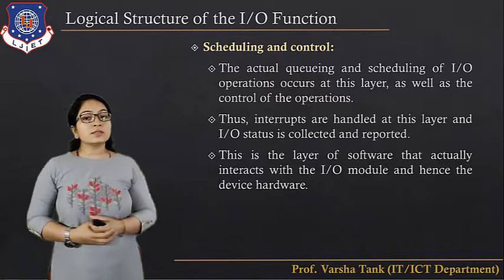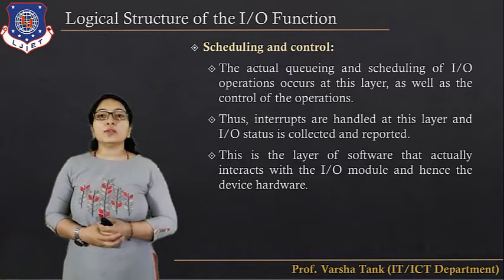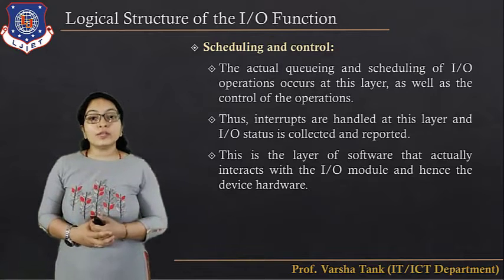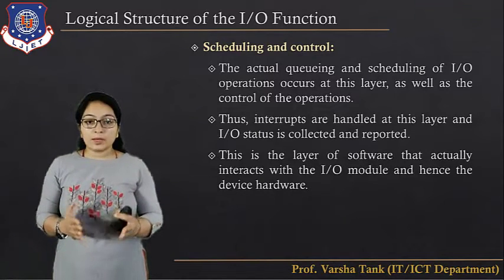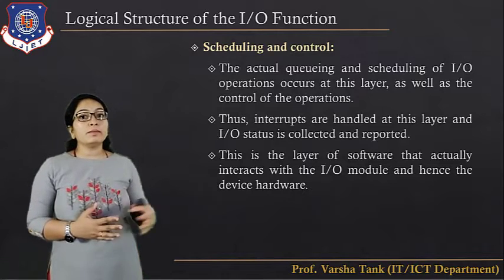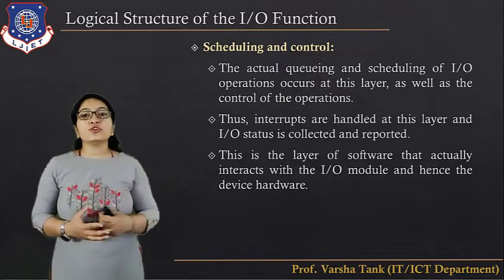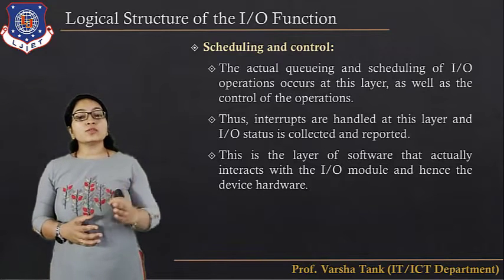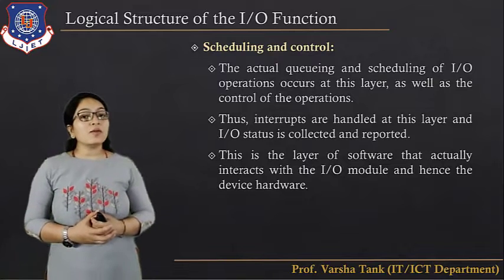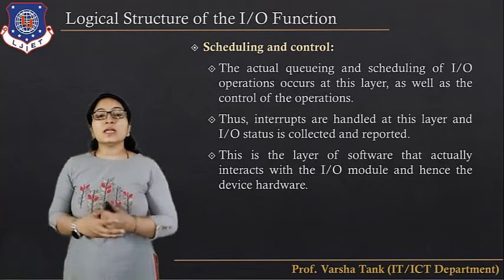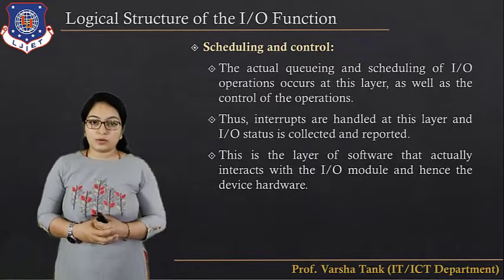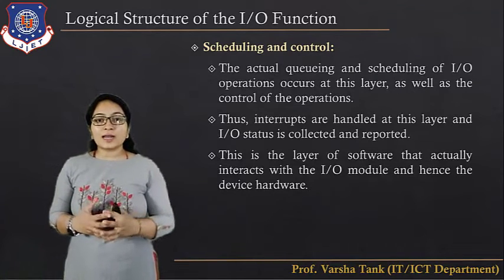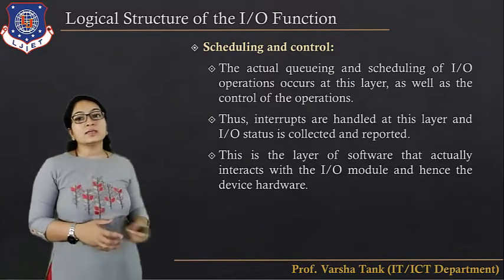The third layer is scheduling and control. The actual queuing and scheduling of IO operations occur at this layer. This includes which process will go for execution, which process will block and for how much time. Interrupts — including context switching — are handled at this layer, and IO status is collected and reported. This layer of software actually interacts with the IO module and hence with the device hardware.